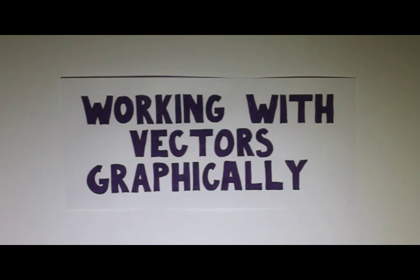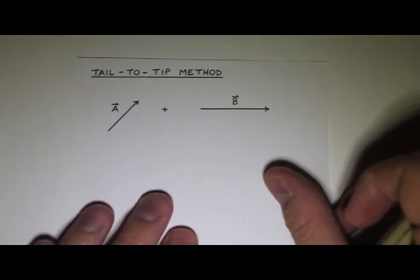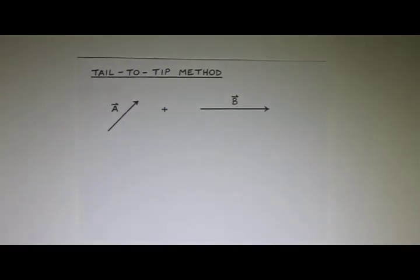So there's two methods to add vectors, and the first one is called the tail-to-tip method. So I have two vectors here, a vector A and a vector B, and I want to add them.